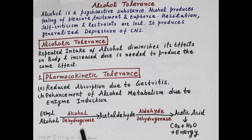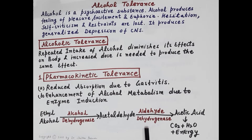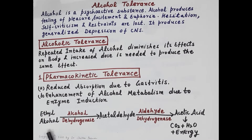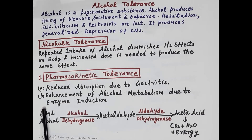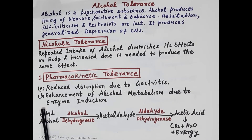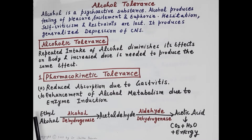Because of increased levels of alcohol dehydrogenase and aldehyde dehydrogenase, there is enhancement of alcohol metabolism. So due to the reduced absorption and the enhancement of alcohol metabolism, more amount of alcohol is required to produce the same effect that was earlier produced by less consumption of alcohol. This is how pharmacokinetic tolerance is produced.